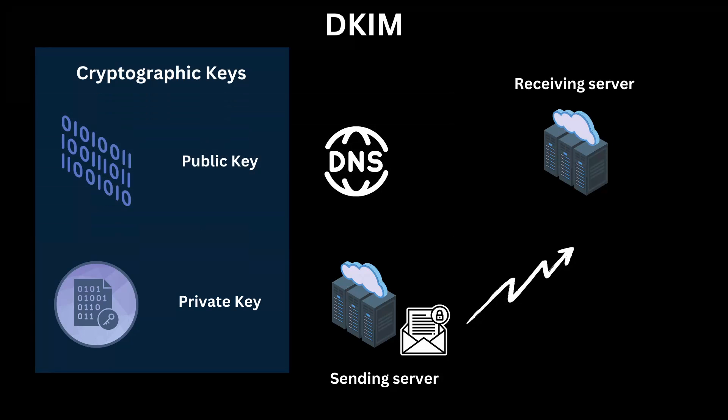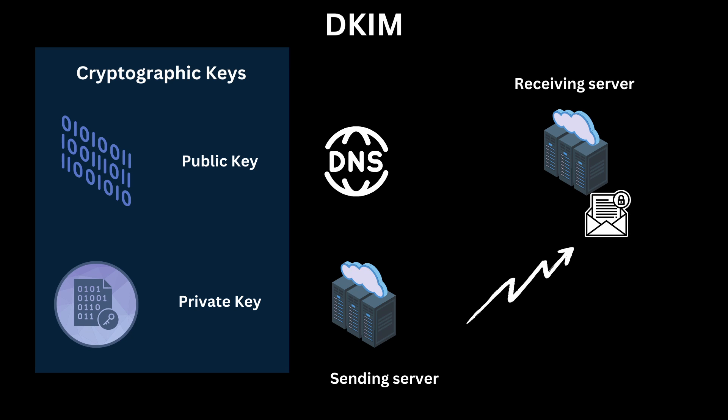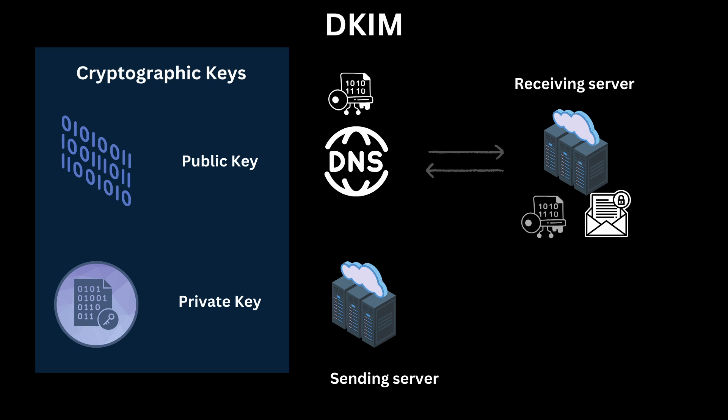When you send an email, the receiving servers get your message with a DKIM signature in the header. This is the moment when the receiving servers check your email. It looks for the public key that has been published in your DNS and uses it to decrypt the signature. If everything matches up, the email passes the DKIM verification.